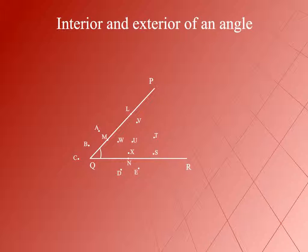The part that exists outside the angle is called the exterior of the angle. For example, points A, B, C, D, E together form the exterior of the angle PQR. The boundary of the angle formed by its two arms is called the angle. For example, points P, L, M, Q, N, R together form the boundary of the angle.